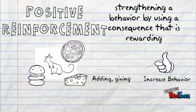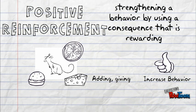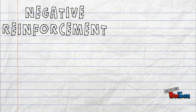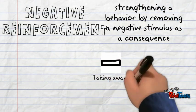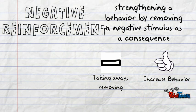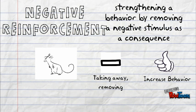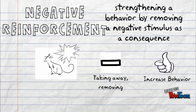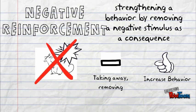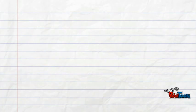Aside from positive reinforcement, there are other ways to increase and decrease the likelihood of behaviors. Negative reinforcement occurs when a negative consequence occurs in order to increase the likelihood of a behavior. If Skinner wanted to use negative reinforcement to make the rats press the lever, he might send an electric shock through the box until the rat pressed the lever. Although this would be an ethically questionable method of reinforcement, the rat's behavior would increase due to its desire to make the negative consequence stop.